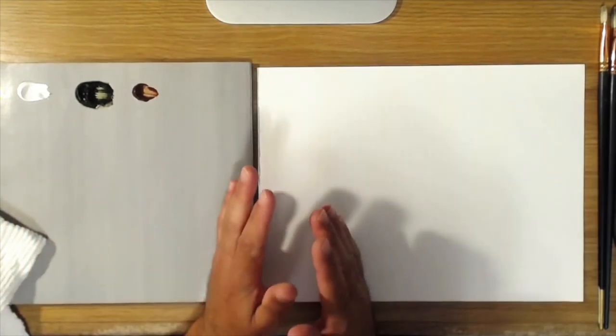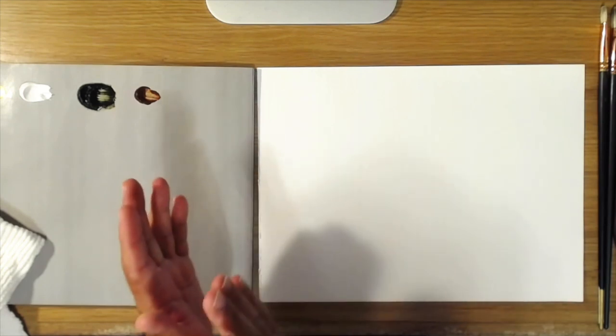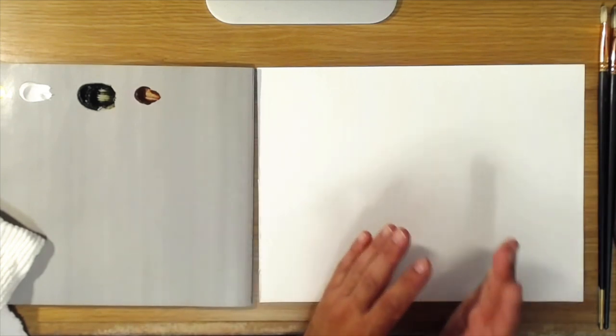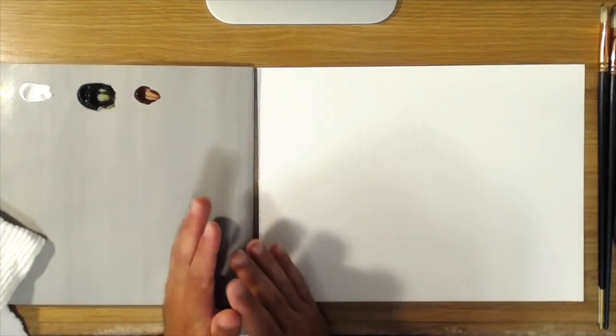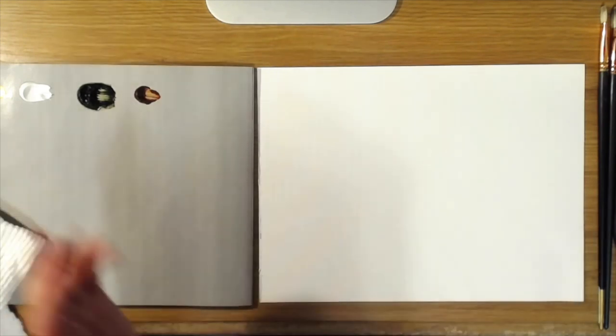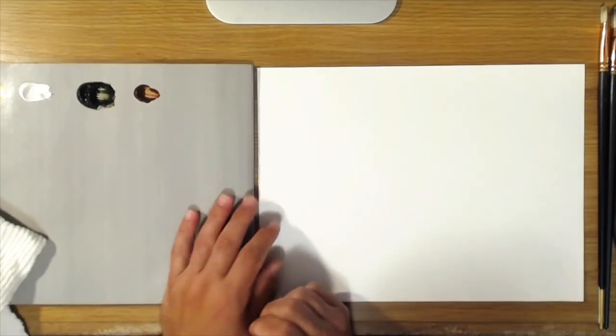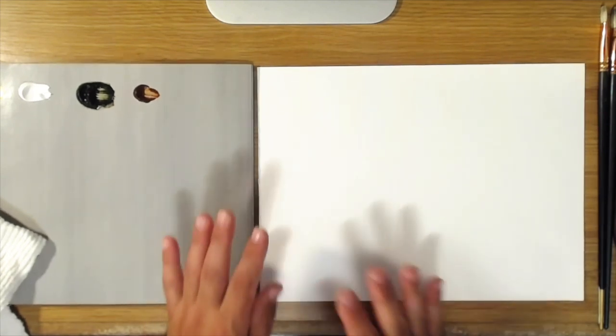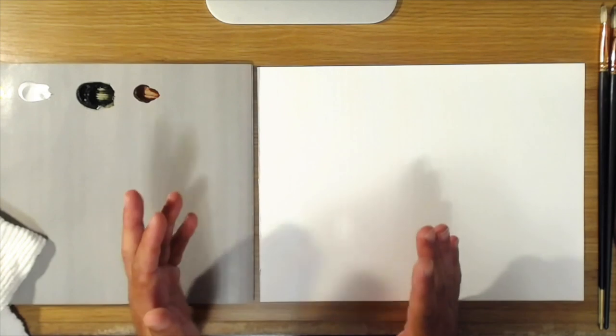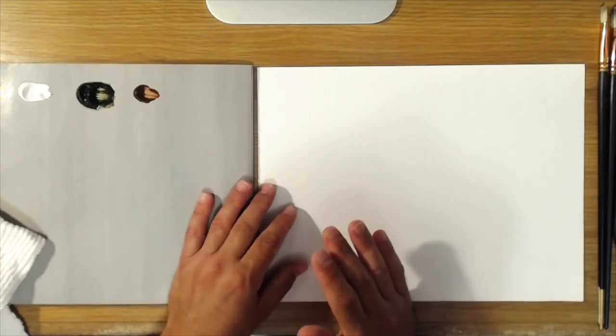So when you're painting, let's say sunflower as a light flower on a dark background, that dark background is going to make the yellow look much lighter than it does when it's on a white palette. So as an artist we need to be aware of those things so that we can take that into account while we're painting.